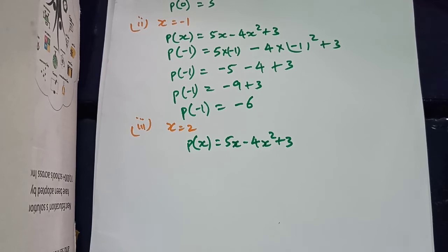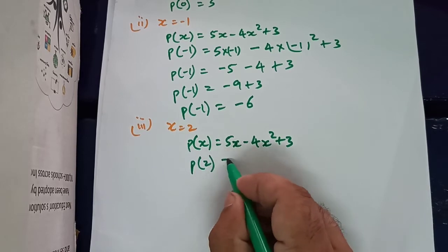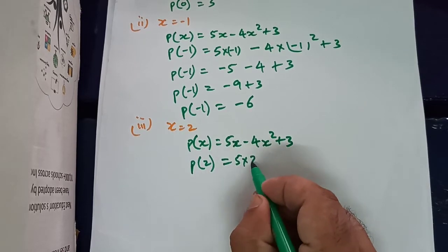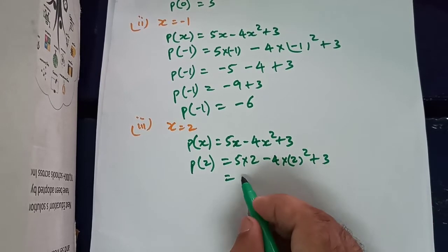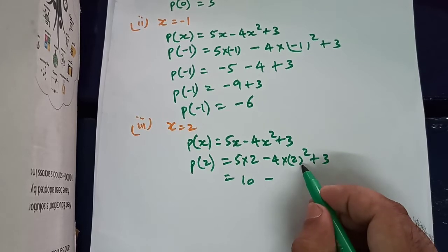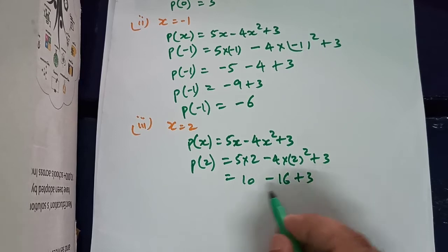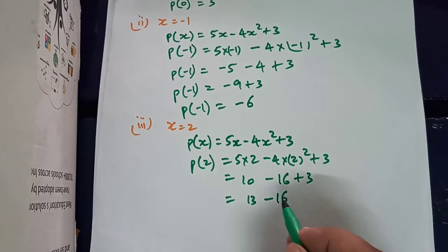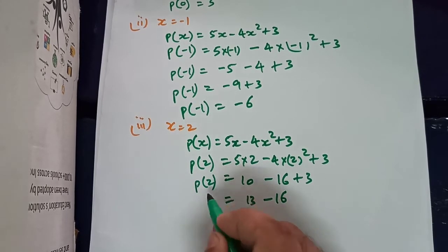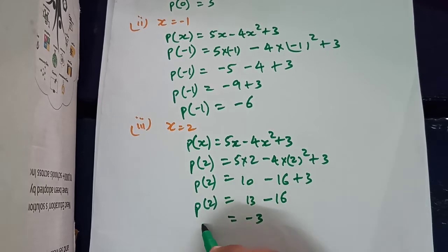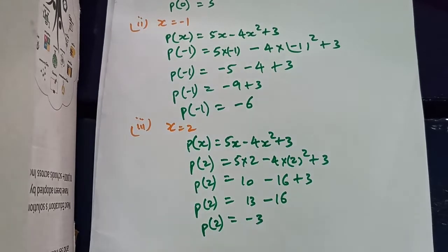Now we find the value of the same polynomial at x equals 2. We substitute x as 2: it becomes 5 times 2, minus 4 times 2 squared, plus 3. So 5 times 2 is 10, minus 2 squared is 4, and 4 times 4 is 16, plus 3. So 10 plus 3 is 13, minus 16 is minus 3. The value of the polynomial at x equals 2 is minus 3.